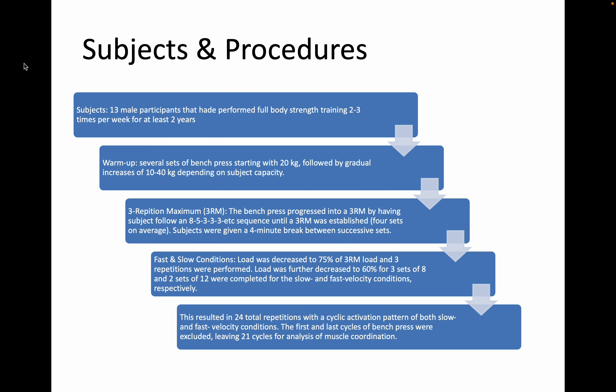For subjects and procedures, there were 13 male participants who were relatively experienced — doing strength training for two years, about two to three times a week. They warmed up with 20 kilograms and gradually increased the weight by 10 to 40 kilograms depending on their capacity. They established their three-rep maximum starting with eight reps, then five, then triples until they found their 3RM, taking about four sets on average.